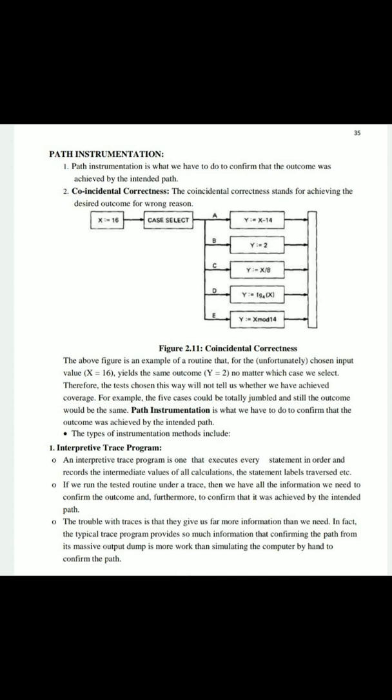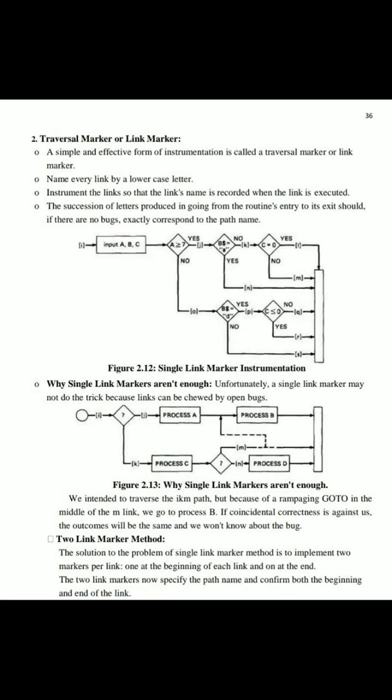We then have all the information we need to confirm the output and to confirm that we have achieved it by the intended path. However, the trouble is that the trace gives far more information than we need — a bulk amount of information. In fact, the typical trace program provides so much information that confirming the path from the massive output dump is more work than simulating the computer by hand. So this is the limitation of the interpretive trace program — too much unwanted information.